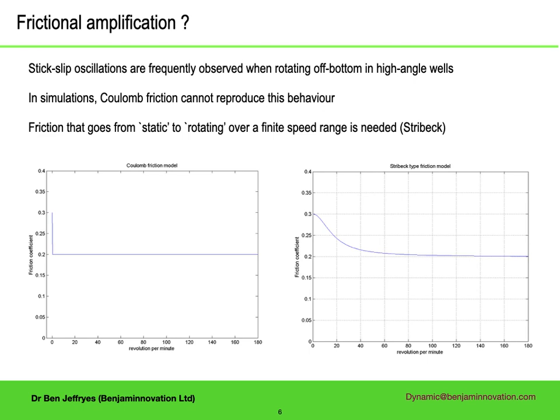Normal wall friction models are Coulomb — they assume a constant friction coefficient once there is relative motion between the drill string and the wall, but a higher static friction coefficient to get motion started. Once the drill string starts rotating off bottom, the torque required is not seen to vary with rotation speed, so this seems a good model. If you put this into mathematical models that include viscous damping, rotational oscillations that may start when the drill string starts rotating are damped down. However, if you use a Striebeck model where the transition happens over a finite rotation speed range, simulations show that the oscillations can continue indefinitely.